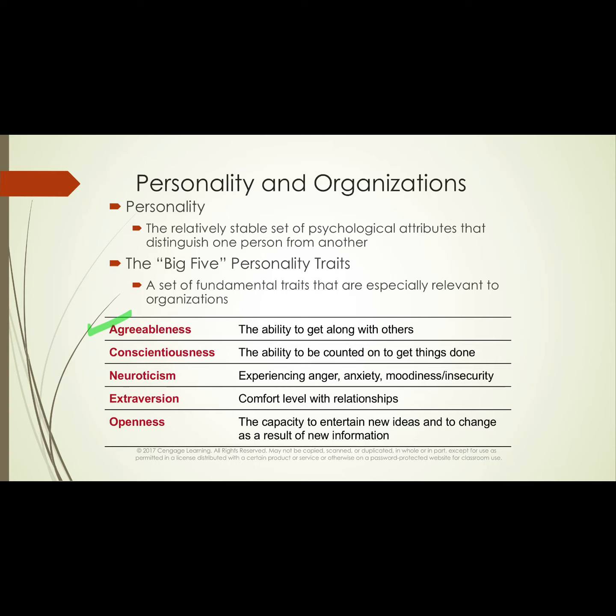First is agreeableness — the extent to which you get along with others. In workplaces requiring teamwork and collaboration, low agreeableness can really hurt. Next is conscientiousness — the ability to be counted on to get things done. Are you considerate of time and others? Do you do what's expected, or do you count on others to carry your weight?